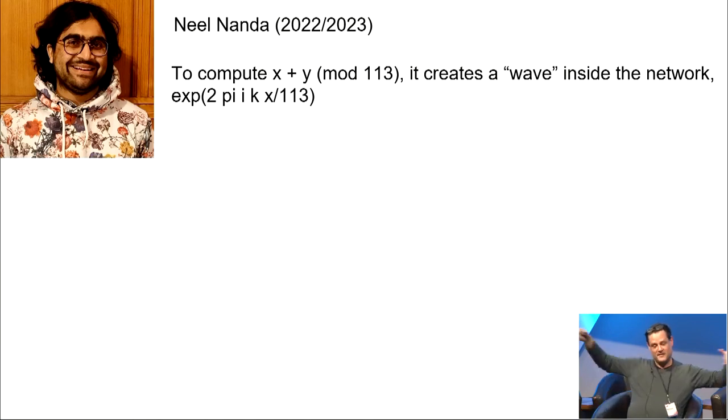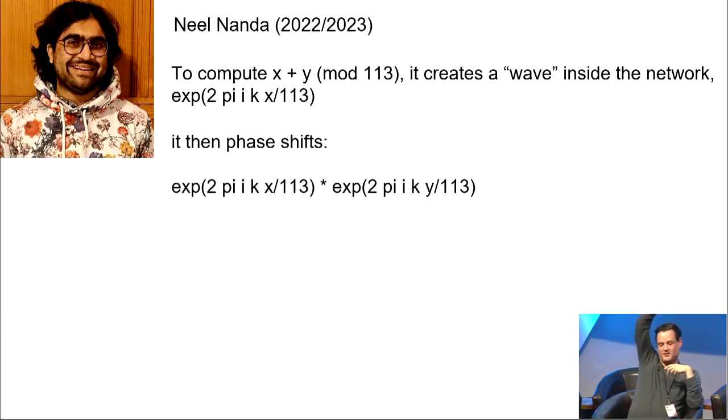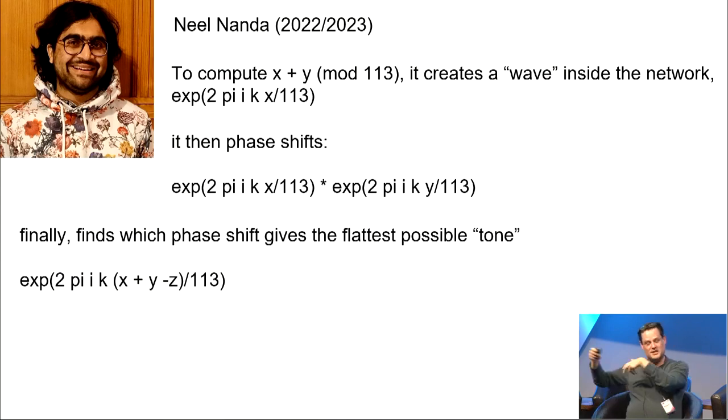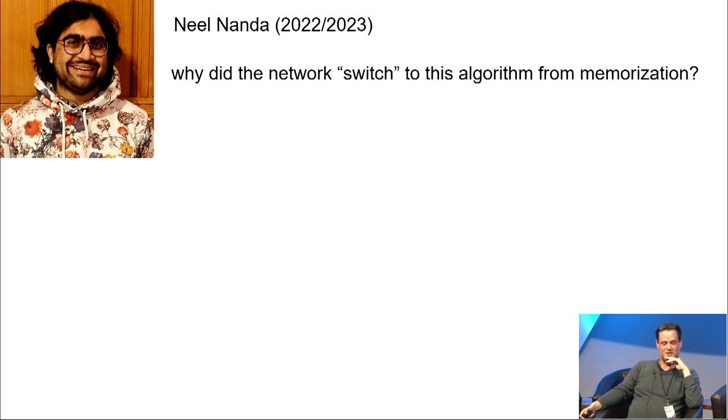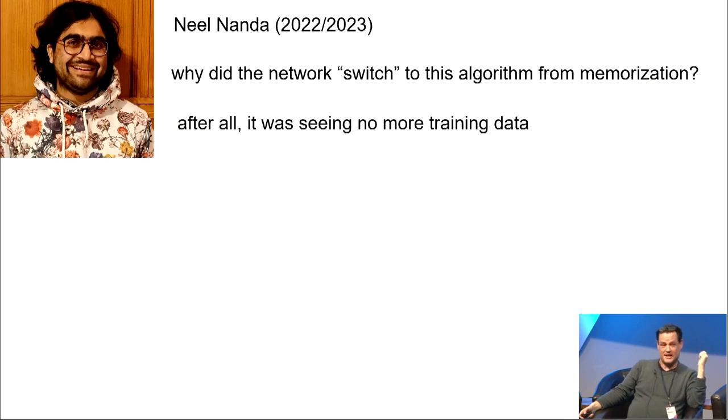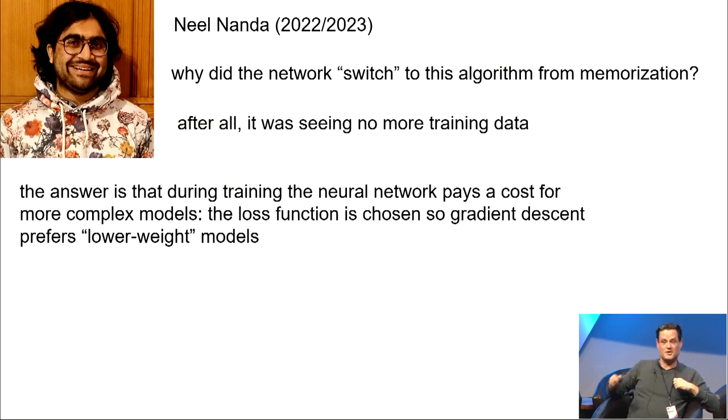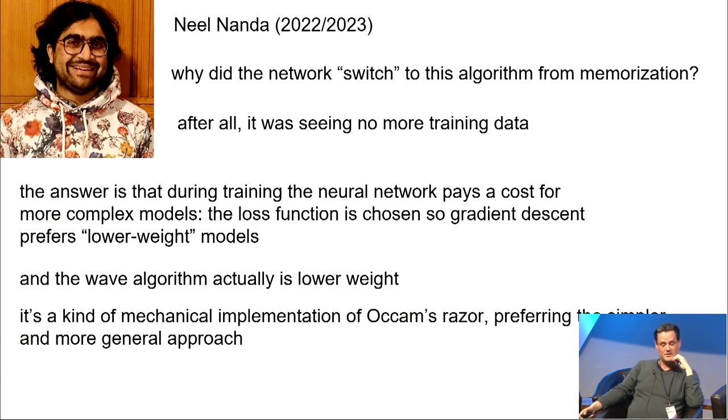It does a phase shift by y over 113 radians. And then, finally, it just looks for the inverse phase shift instead, which gives you the flattest possible tone at the output. That's what it was learning to do. It's kind of a radio frequency engineer or group representation theorist's approach to modular addition. The question is, why did the network switch to this algorithm from memorization? After all, it was seeing no more training data. And the answer is that during training, the neural network pays a cost for more complex models. The loss function is chosen, so gradient descent prefers lower weight models. And the wave algorithm is actually lower weight, so it is preferred. It is simpler. It is more able to generalize. It's almost a kind of a mechanical implementation of Occam's razor, preferring the simpler and more general approach.